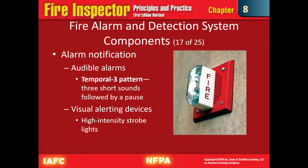Notification devices include audible alarms. The standard alert per NFPA 72 is the Temporal-3 pattern — three short blasts followed by a pause. That is the industry and code standard for alerting devices, so no matter where you hear that sound, you know it's a fire alarm. There's also the visual alerting device — a high-intensity strobe light. Even in midday those are pretty bright and get people's attention, including those who are hard of hearing, letting them know they need to get out.